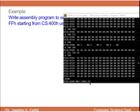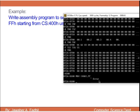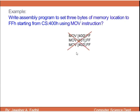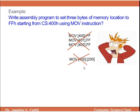However, this is not correct in assembly programming. When I try MOV FF to [400] and press ENTER, it gives an error. Similarly, moving data directly from one memory location to another memory location is also not allowed. That's why we need to learn the correct coding approach.